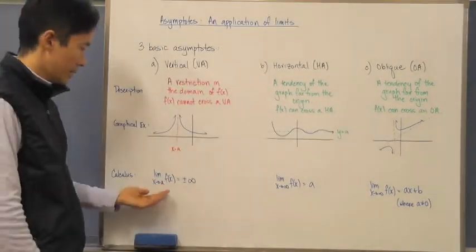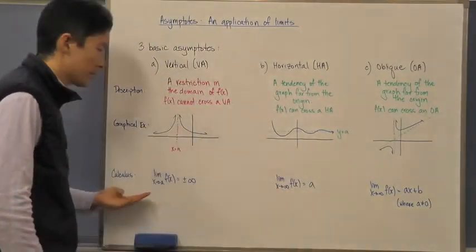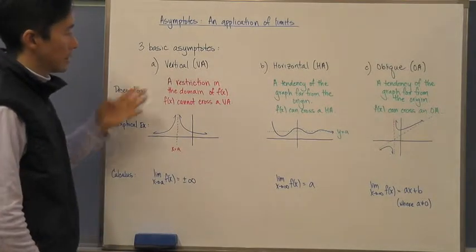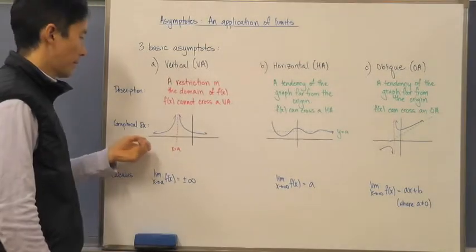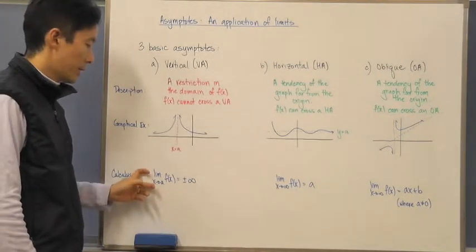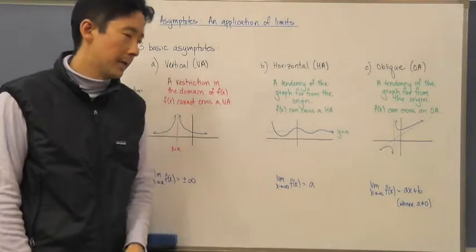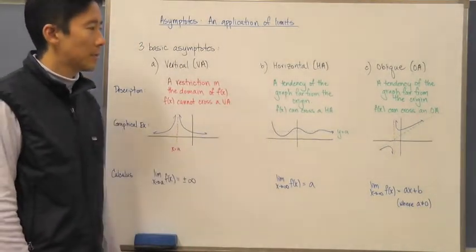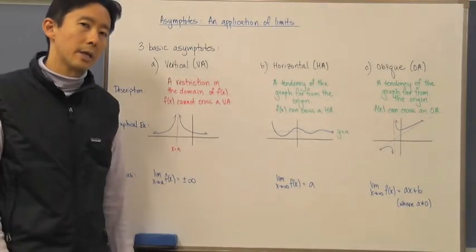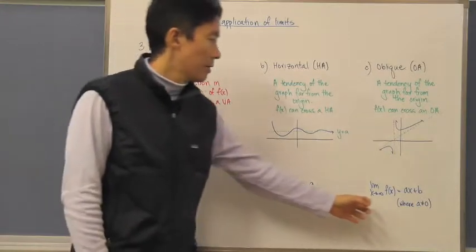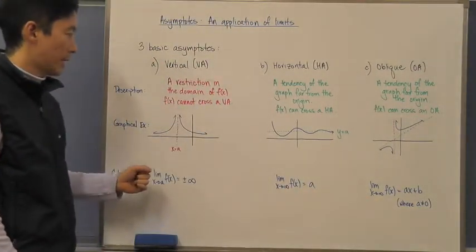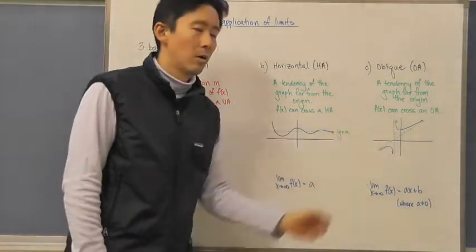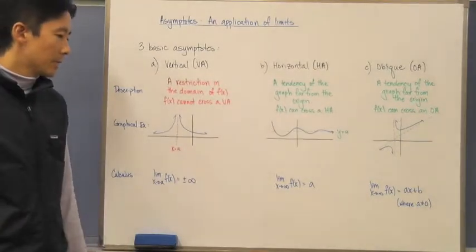So we have three basic asymptotes as applications of limits. Using limits, we can now describe asymptotes not only as visual descriptions or graphs, but also in precise mathematical language. In class, we'll take a look at how functions from the textbook can be analyzed using limits to show and prove that particular functions have vertical, horizontal, or oblique asymptotes.